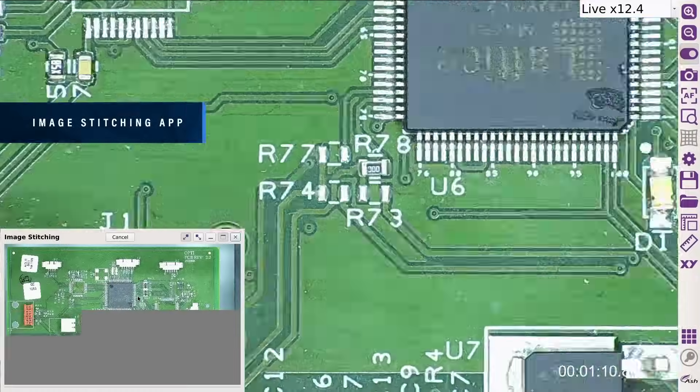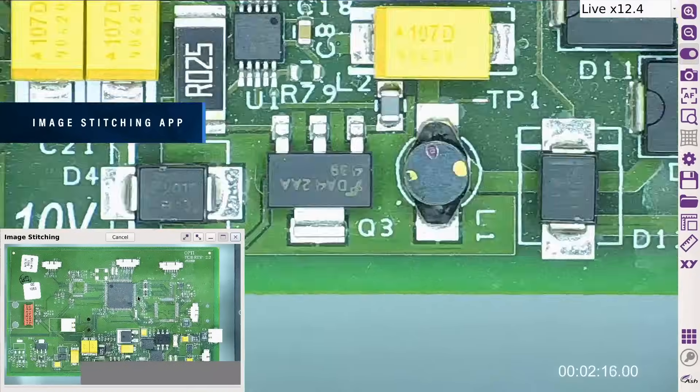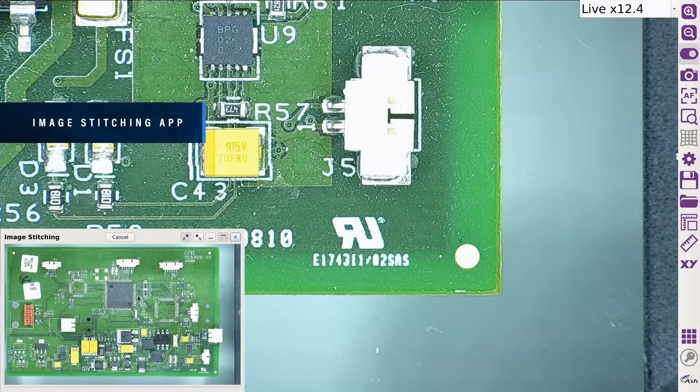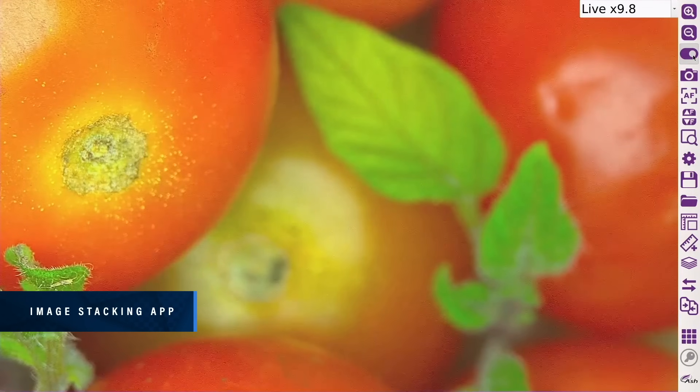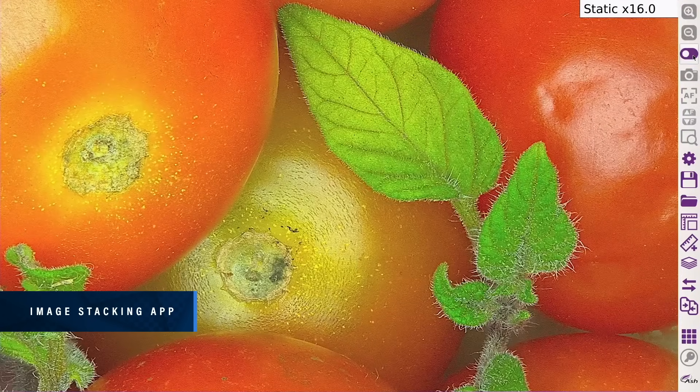Stitch multiple images together increasing your field of view at high magnification. The Enhanced Image Stacking app improves image focal depth to create one high quality, fully focused sharp image, allowing easy and fast inspection.